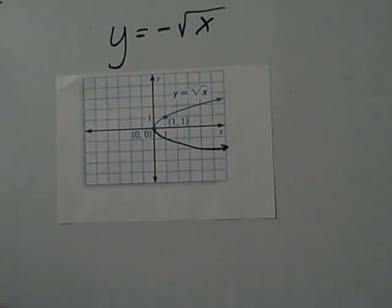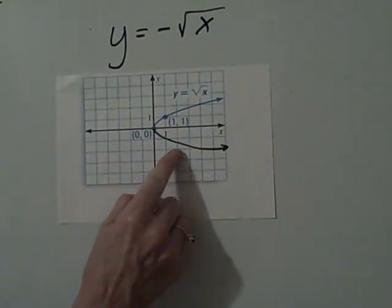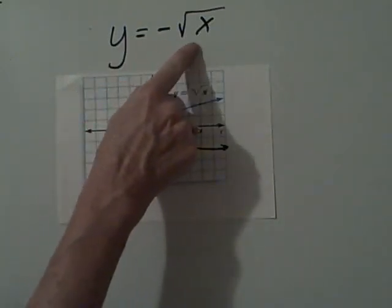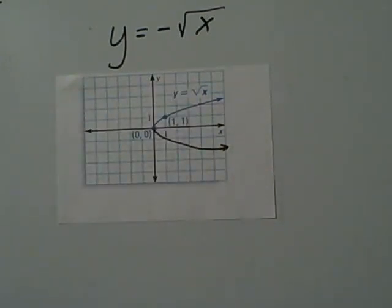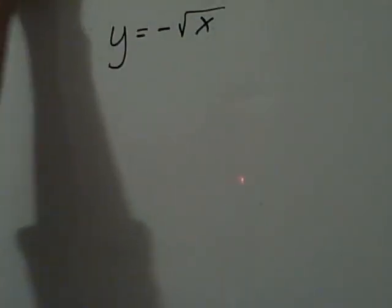So now this new graph is y equals negative square root of x. The original value flips over the x axis. If you have any questions please ask. And we're going to do the cubic function next. So let's look at those.